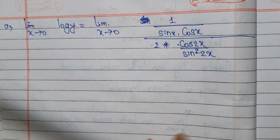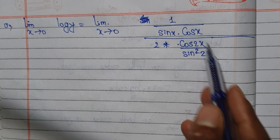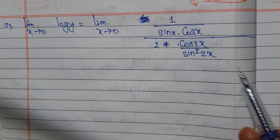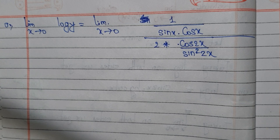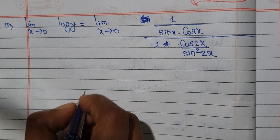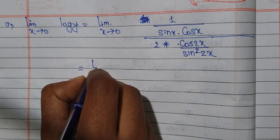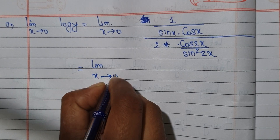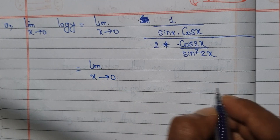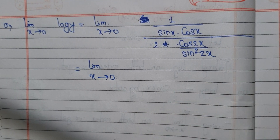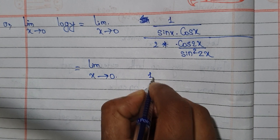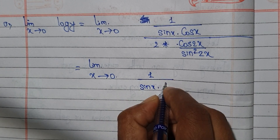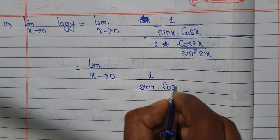Clear sin. If we can do this — 2x is equal to 2x. We can simplify this. Here, sin x minus cos x into 2 by 2.